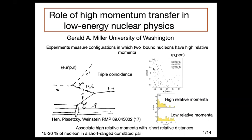The first point is that experiments measure configurations in which two bound nucleons have high relative momentum. This is a challenging thing which takes a lot of experimental effort. Imagine you shoot an electron into a nucleus; out comes the electron that has been scattered as we exchange a virtual photon, and the aim is to have an experiment that can see correlated nucleons in the initial state.